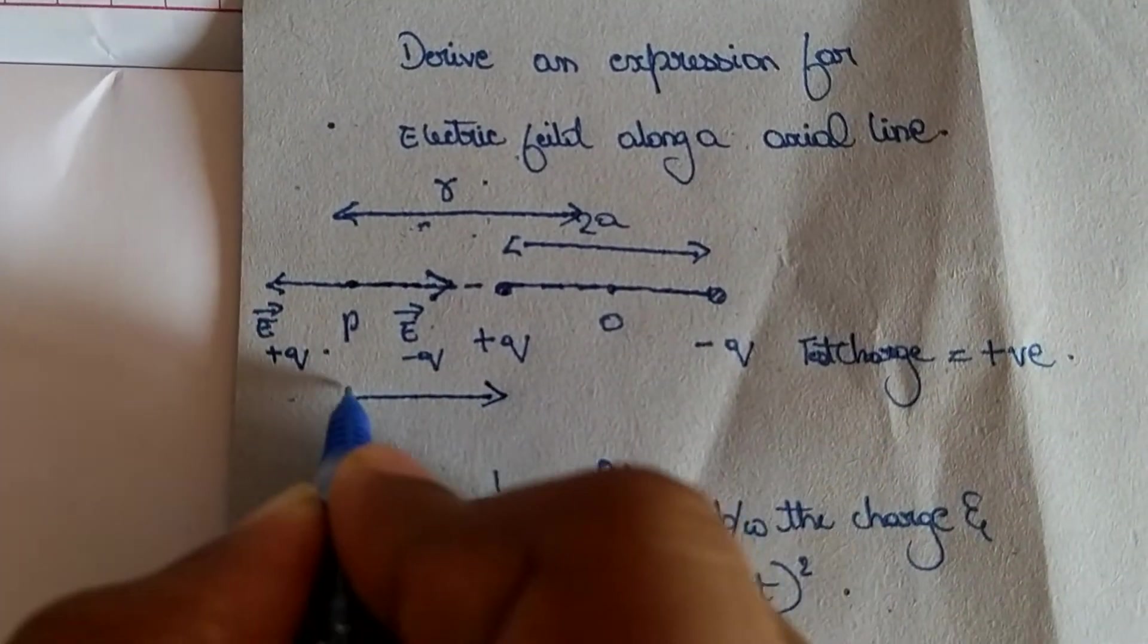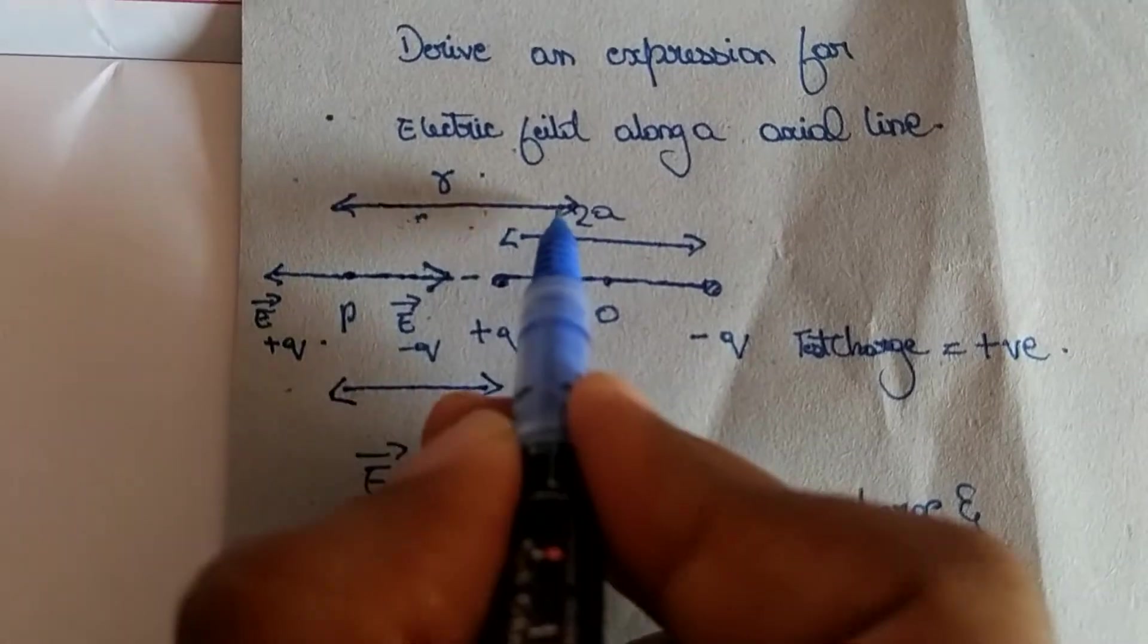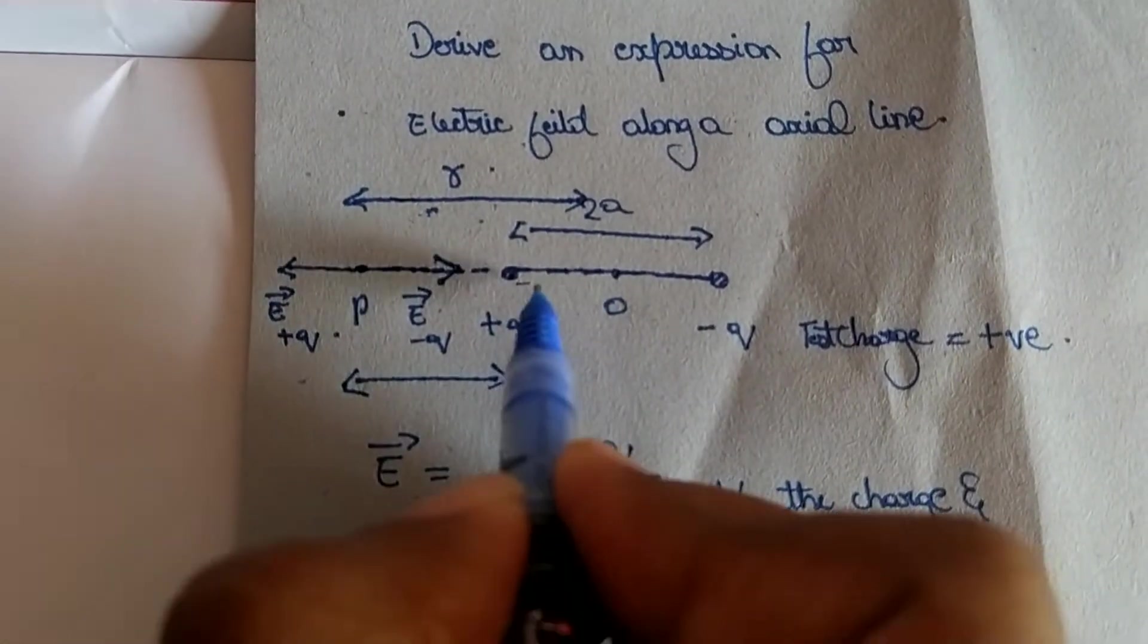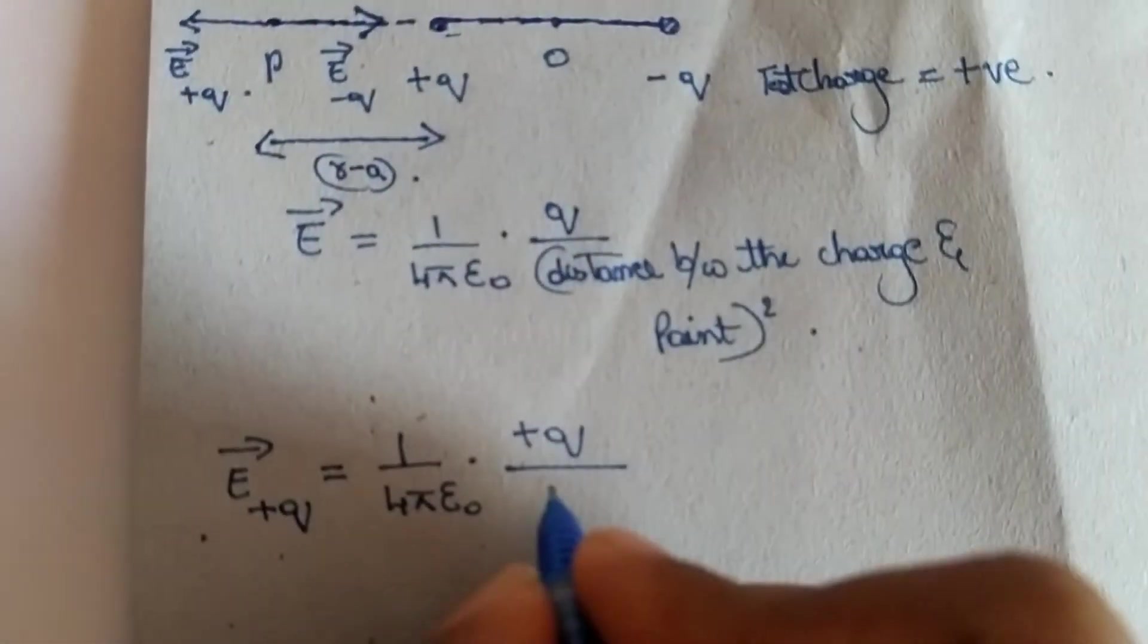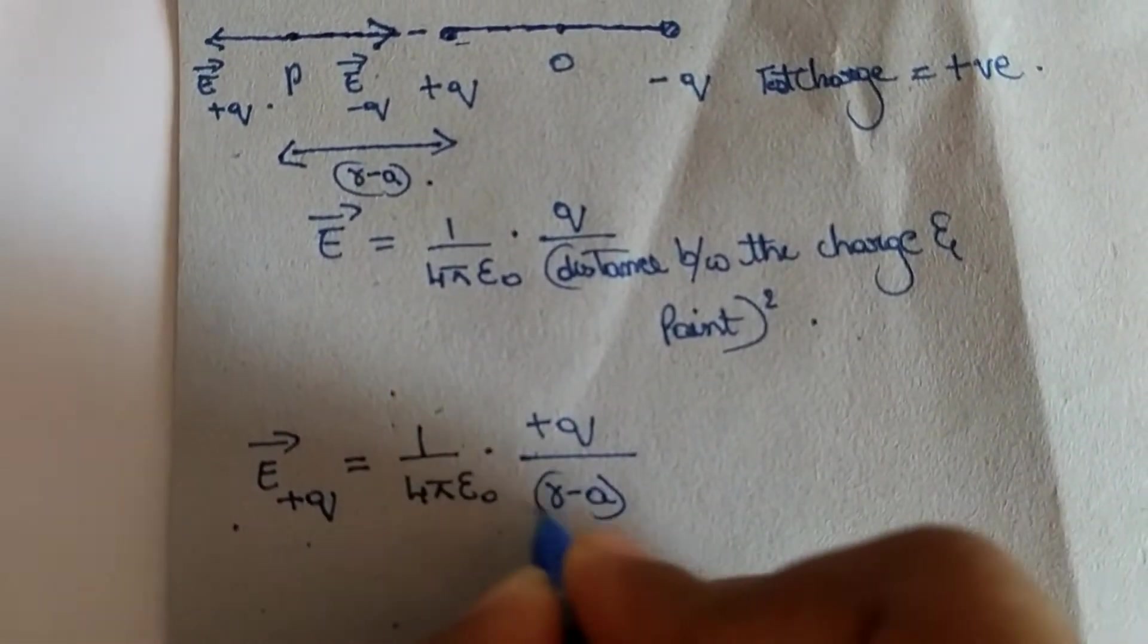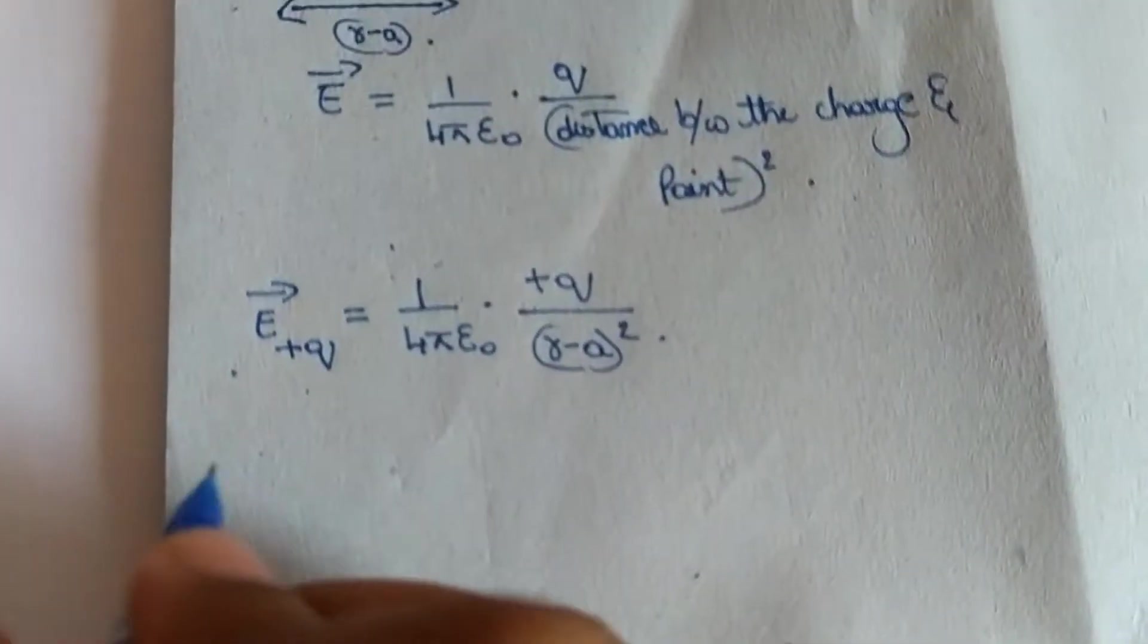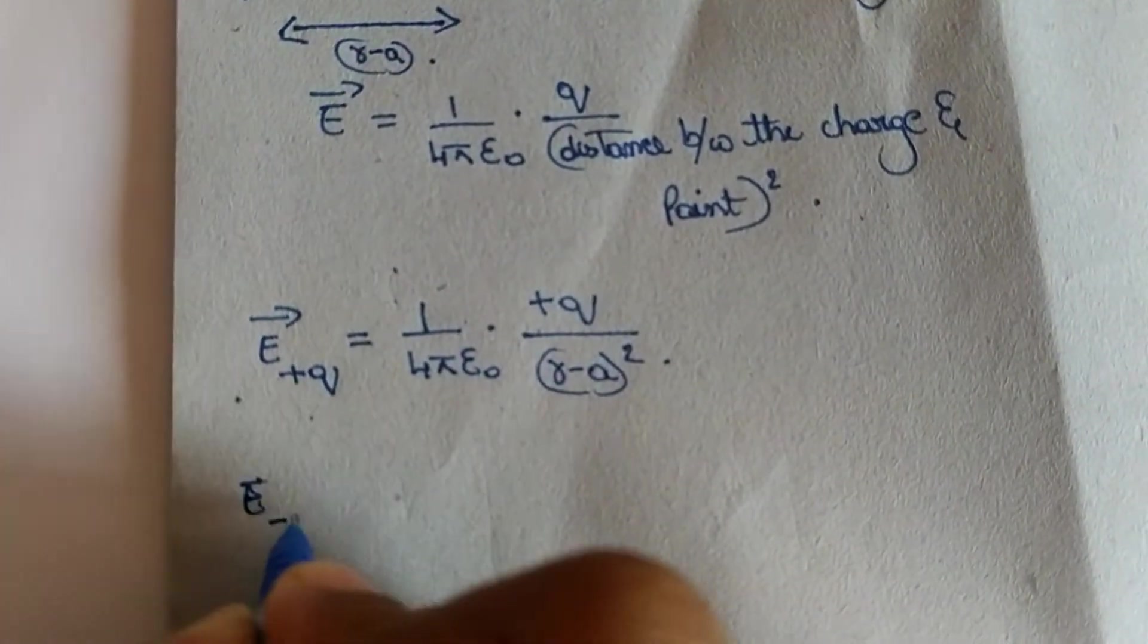Let us consider this. You can see here the distance is r and this distance is a. Therefore r minus a is the distance between the charge and the point. Therefore r minus a whole square.